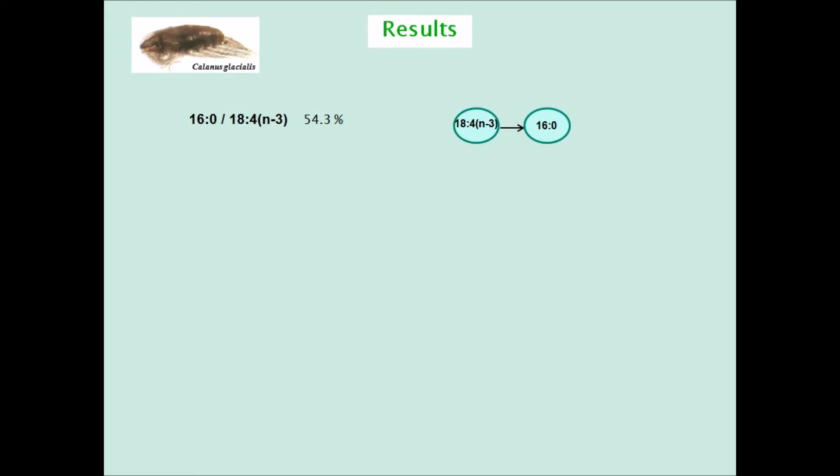This is represented on the right by the denominator fatty acid pointing to the numerator one, although it actually makes no difference to variance explained which way the arrow points.